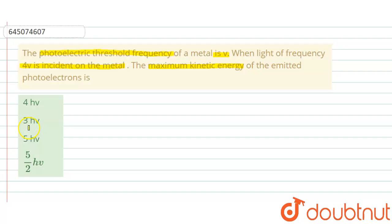There are 4 options given: 4Hµ, 3Hµ, 5Hµ, and 5/2Hµ. So in this case, this is a case of photoelectric effect in which threshold frequency is given, which is µ. You can write threshold energy φ equals H times µ. This is threshold energy, the minimum energy required to knock out an electron from the metal surface.